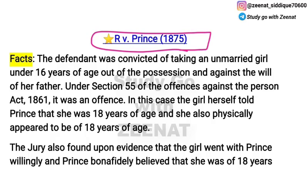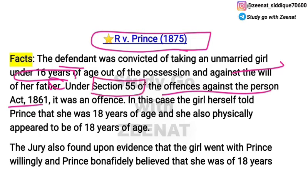What was the case? In R v Prince (1875), a man named Prince took away a girl. Her age was 16 years old. He took her away without her father's permission — under Section 55 of the Offences Against the Person Act 1861.